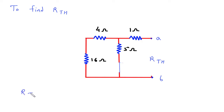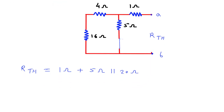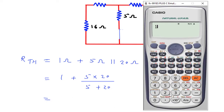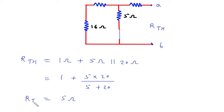RTH is equal to 1 ohm plus 5 ohm parallel with 20 ohm (since 4 plus 16 is 20). So RTH equals 1 plus (5 into 20) divided by (5 plus 20), which gives RTH equals 5 ohm. So RTH, Thevenin's resistance, is 5 ohm.